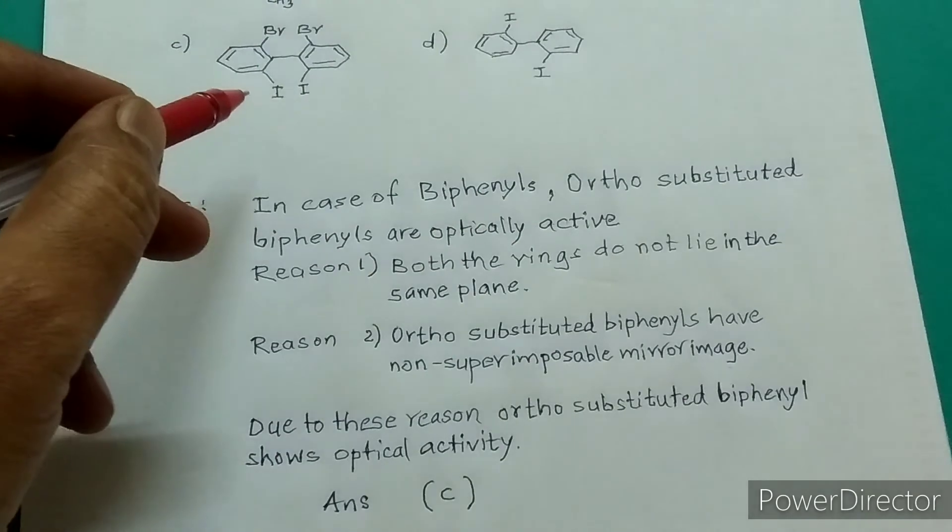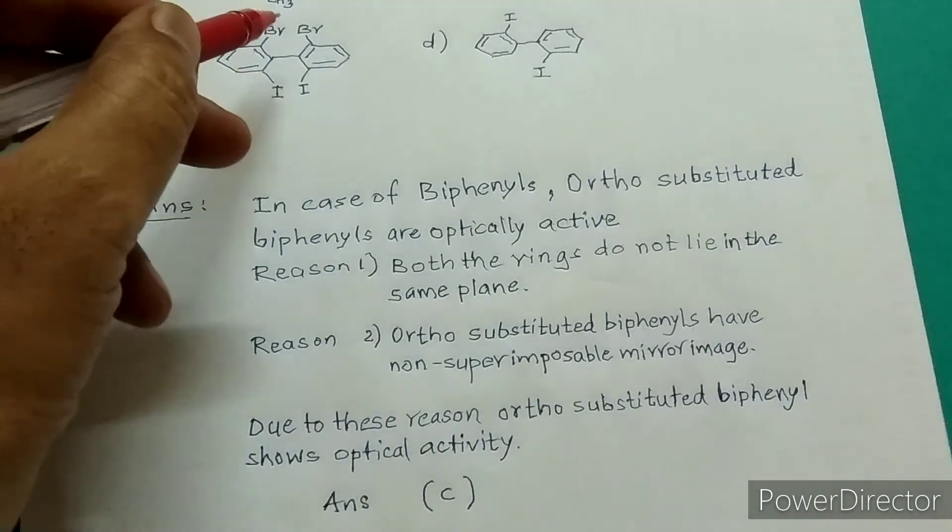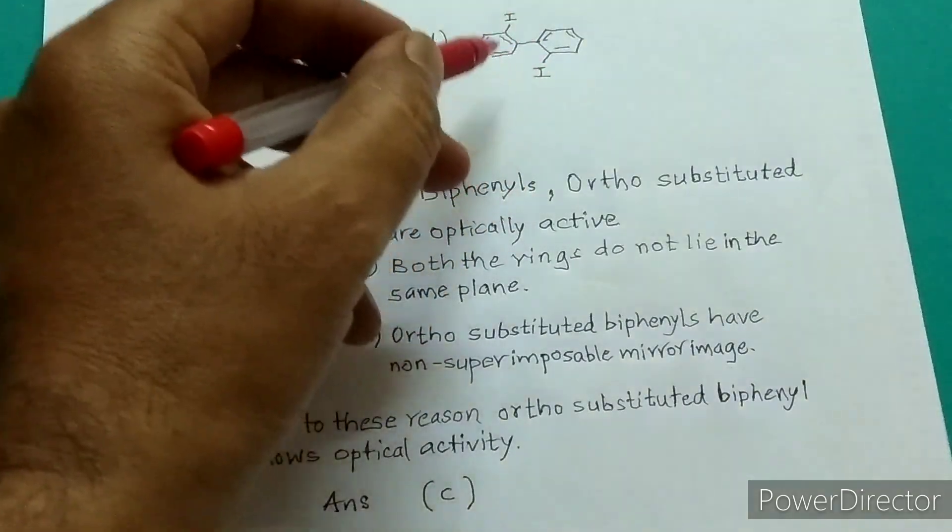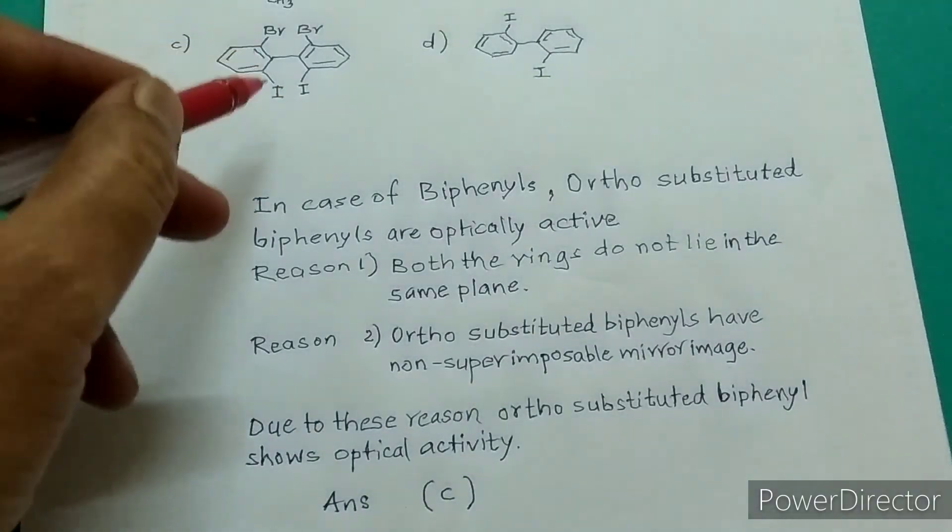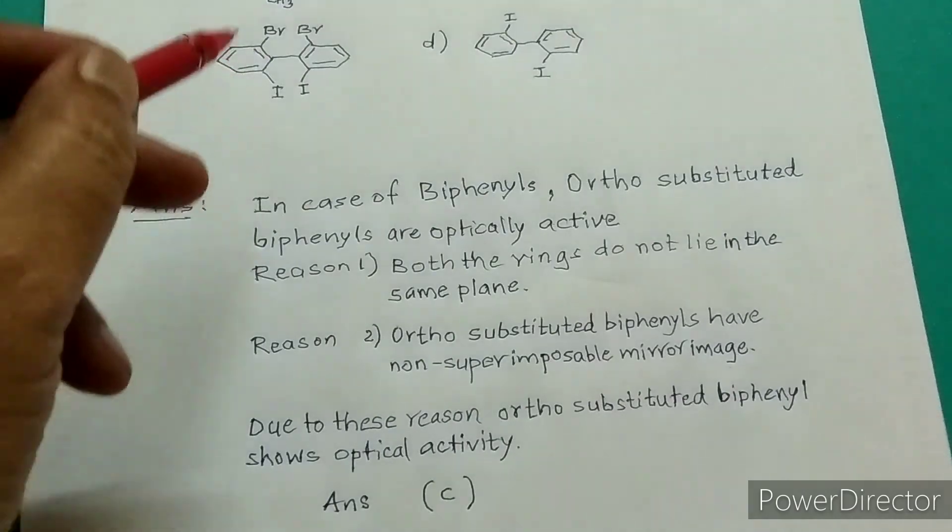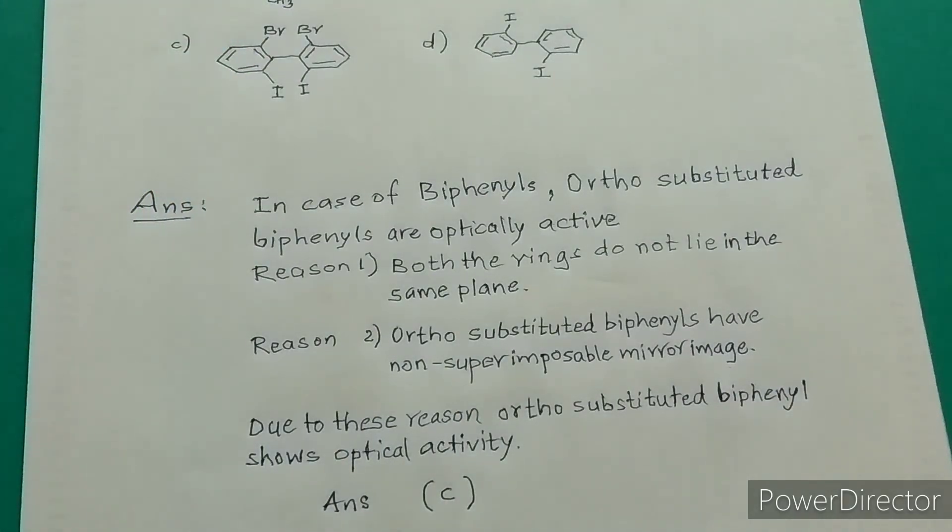ortho-substituted and this is also ortho-substituted, but here bulkier groups are present and here very less crowding is present. Therefore, bulkier groups and more crowding make the biphenyl optically active. Therefore, option C is the correct answer to this question.